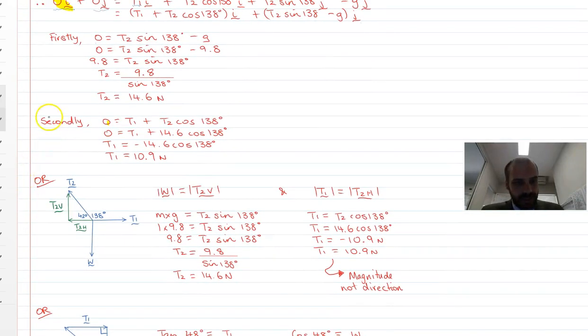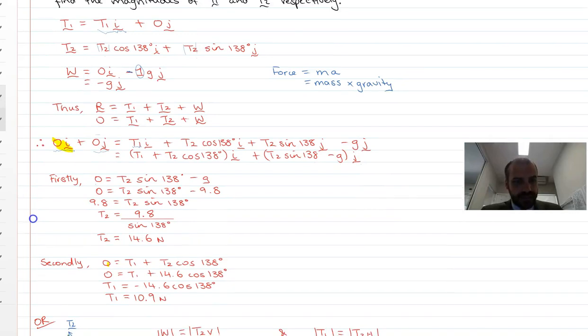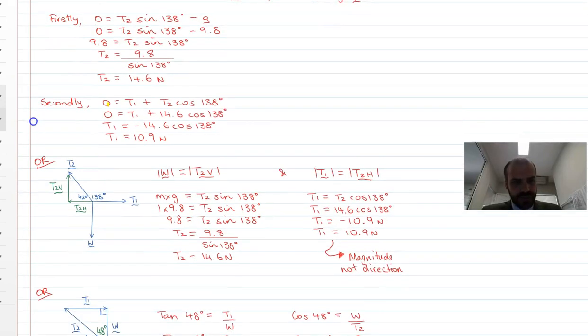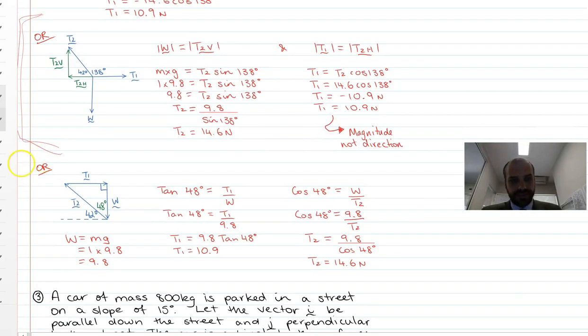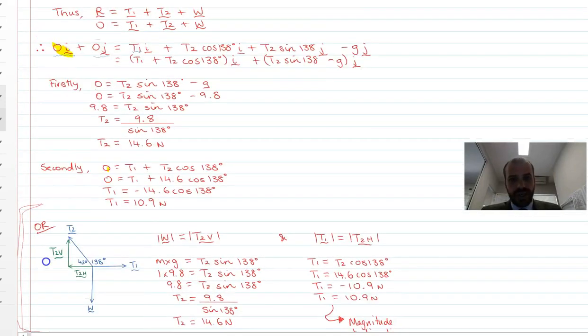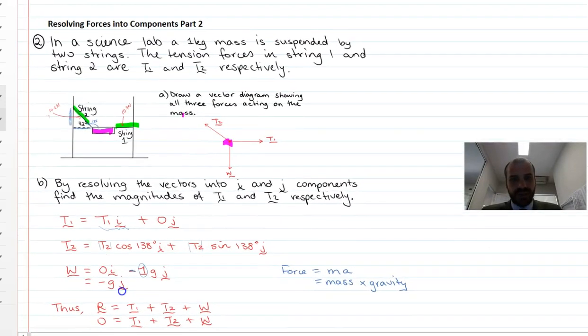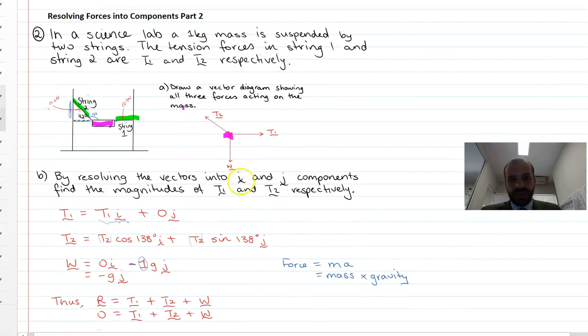So you can see, here we are. Oh, actually, don't worry about this. This is an alternative method of calculating those same ideas. So now we have, let's see what we were first looking at. By resolving the vectors into i and j components, find the magnitudes of term 1 and term 2, or tension 1 and tension 2, respectively. We've done that now.